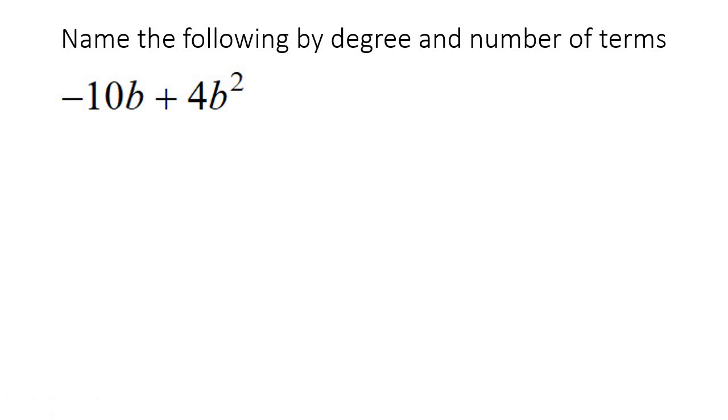With this one over here, the highest exponent is a 2, so that would be a second degree. And then there's two terms, like a bicycle, that is a binomial.